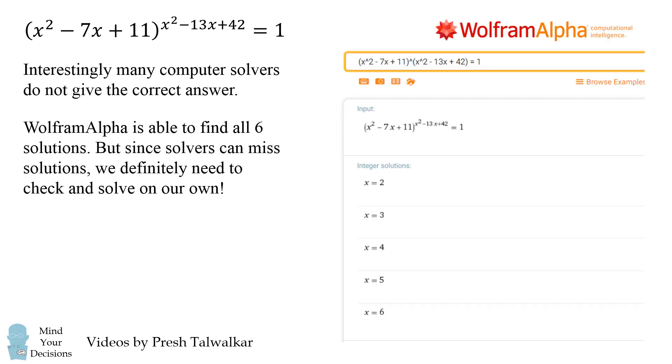To its credit, Wolfram Alpha is able to find all six solutions, but since solvers can miss solutions, we definitely need to check and solve on our own.